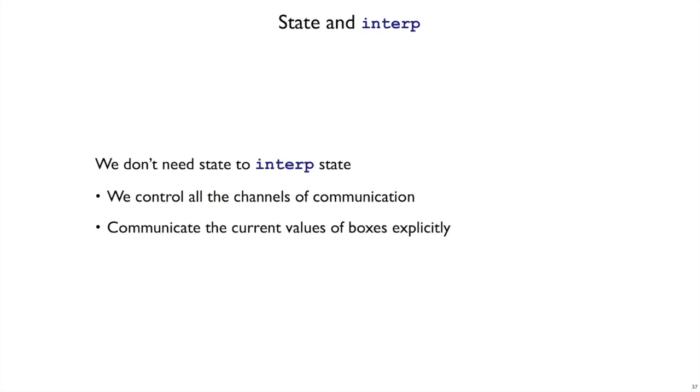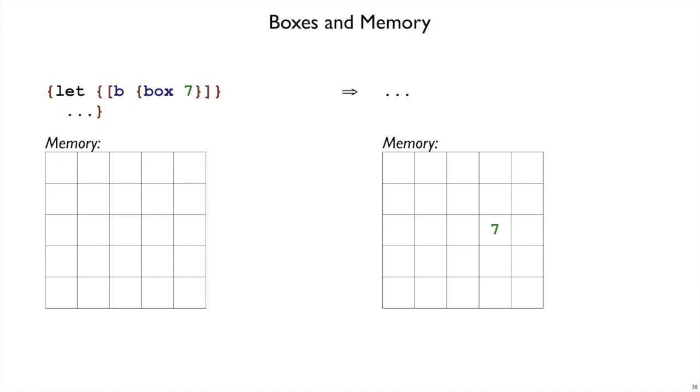We control all of the code for the interpreter, so we control all the channels of communication. And that means we can implement boxes at the curly level by, at the plate level, passing along all of the relevant information.